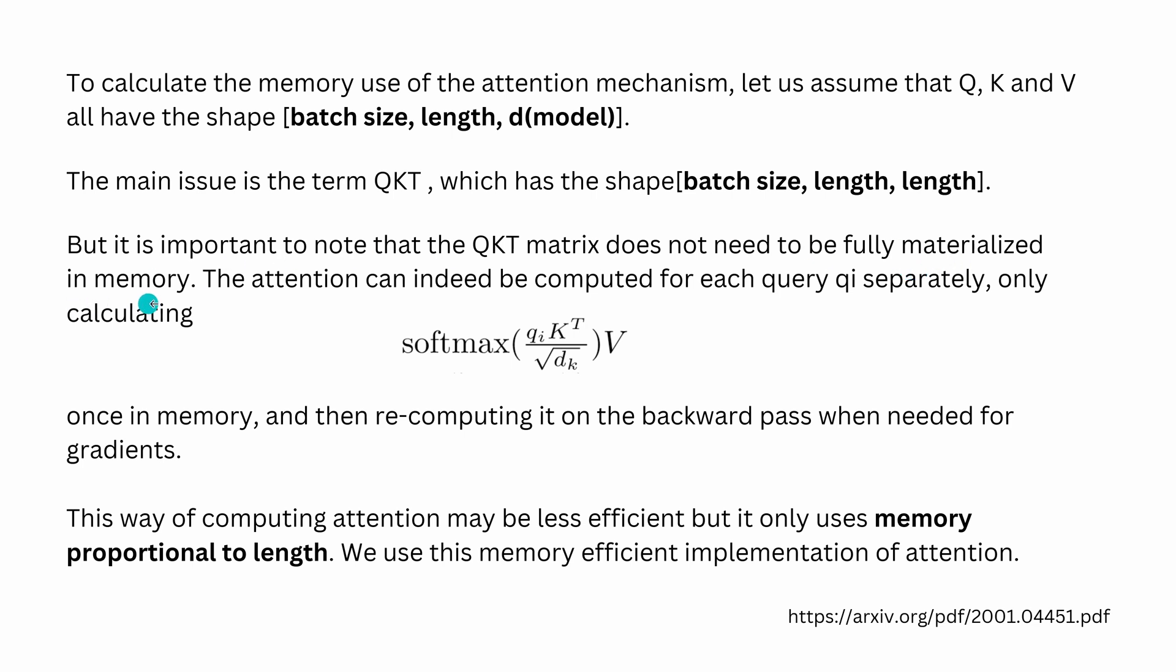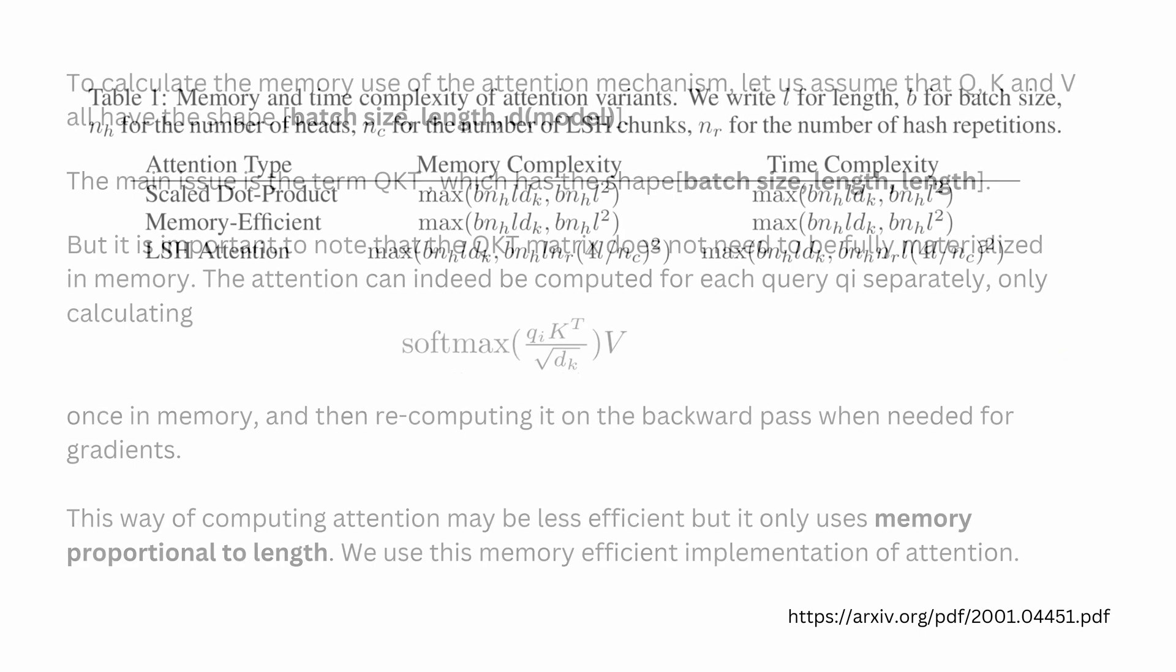The main issue is, yes, as I showed you—important—yes, the matrix does not need to be fully materialized in memory. The attention mechanism can indeed be computed for each query qi separately, for each query qi separately, only calculating this expression once in a memory, and then recomputing it on the backward pass when needed for the gradients. And this is the beauty, this is the elegance. So this way of computing attention may be less efficient, but it only uses memory proportional to length, because as you can see here, we have here a length times the log of length, and this is not L squared. Congratulations, we found a solution!